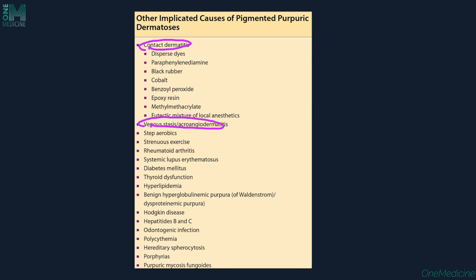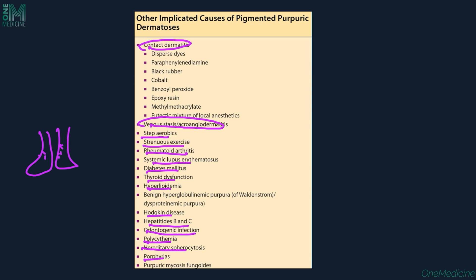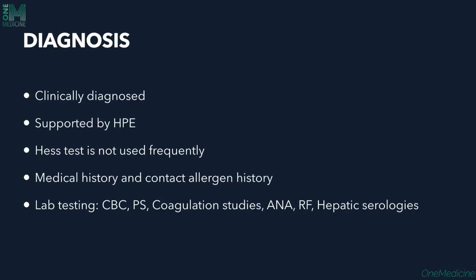Venous stasis or acroangiodermatitis from chronic venous insufficiency presents with lesions on the distal extremities and can mimic Kaposi's sarcoma — hence sometimes called pseudo-Kaposi's sarcoma. Other conditions that can mimic or be associated with PPD include step aerobics, rheumatoid arthritis, SLE, diabetes mellitus, thyroid dysfunction, hyperlipidemia, Hodgkin's lymphoma, hepatitis B and C, odontogenic infections, polycythemia, hereditary spherocytosis, porphyrias, and purpuric MF.